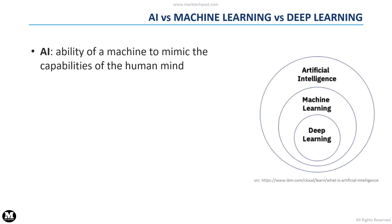Artificial intelligence is the ability of a machine to mimic the capabilities of the human mind. For example, we can consider machines that can recognize objects, make decisions, or understand natural language.